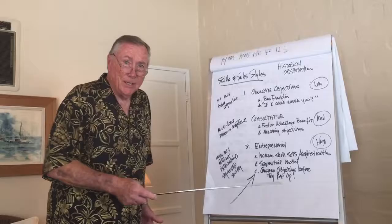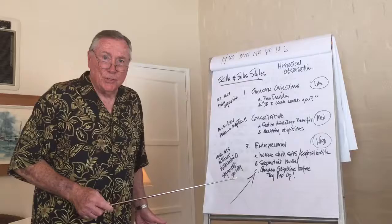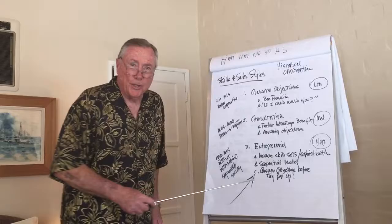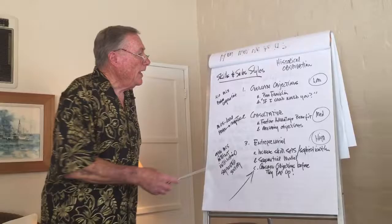Then we had the consultative approach, which was basically the advent of the feature advantage benefit process that we used, and we still added overcoming objections. That is today a medium income level.